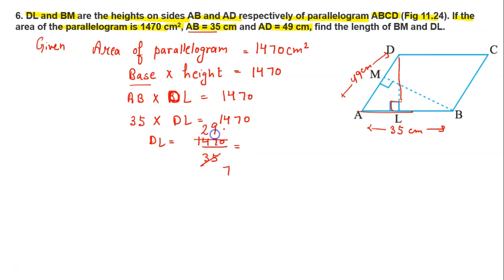Now, 35 into DL equals 1470. Dividing: 7 into 4 is 28, 7 into 2 is 14. So DL value is 42 cm.